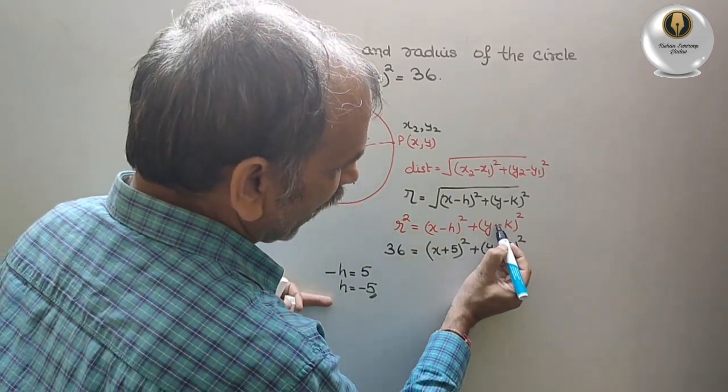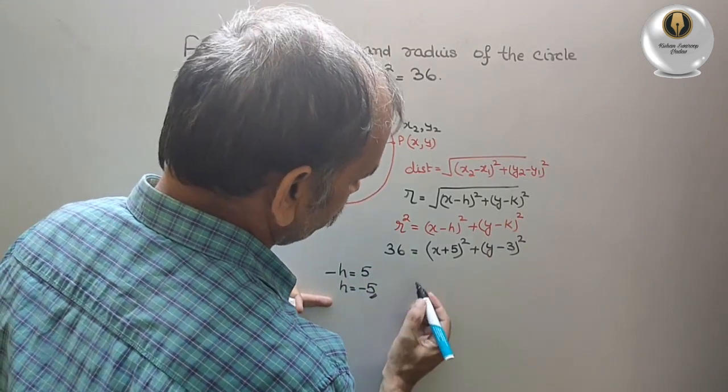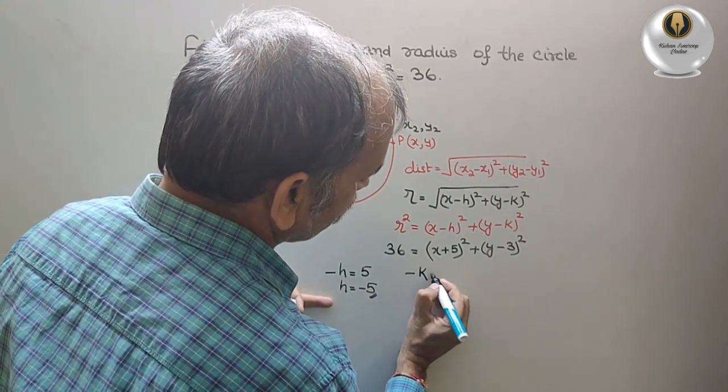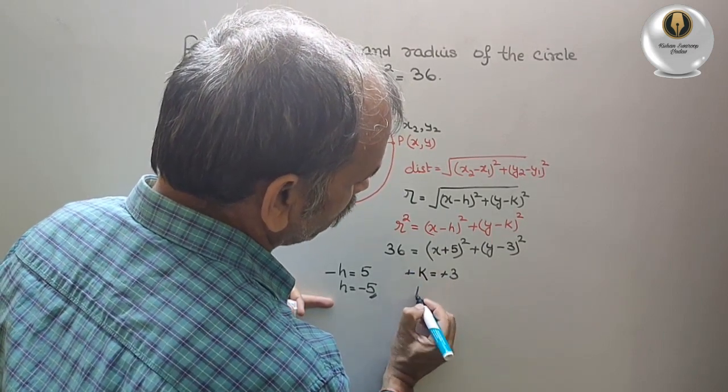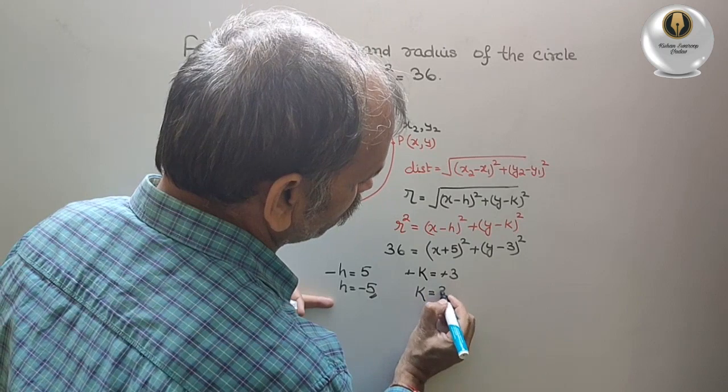Here minus k is minus 3. Minus k is equal to minus 3. Minus and minus cancel. Therefore k is equal to 3.